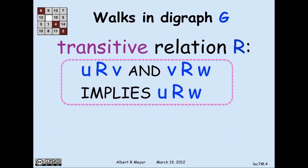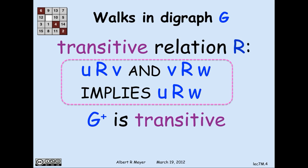A relation r on a set — where the domain and co-domain of r are the same — is transitive if u r v and v r w implies u r w. A relation that has that property is said to be transitive. The positive path relation of any graph g is transitive.